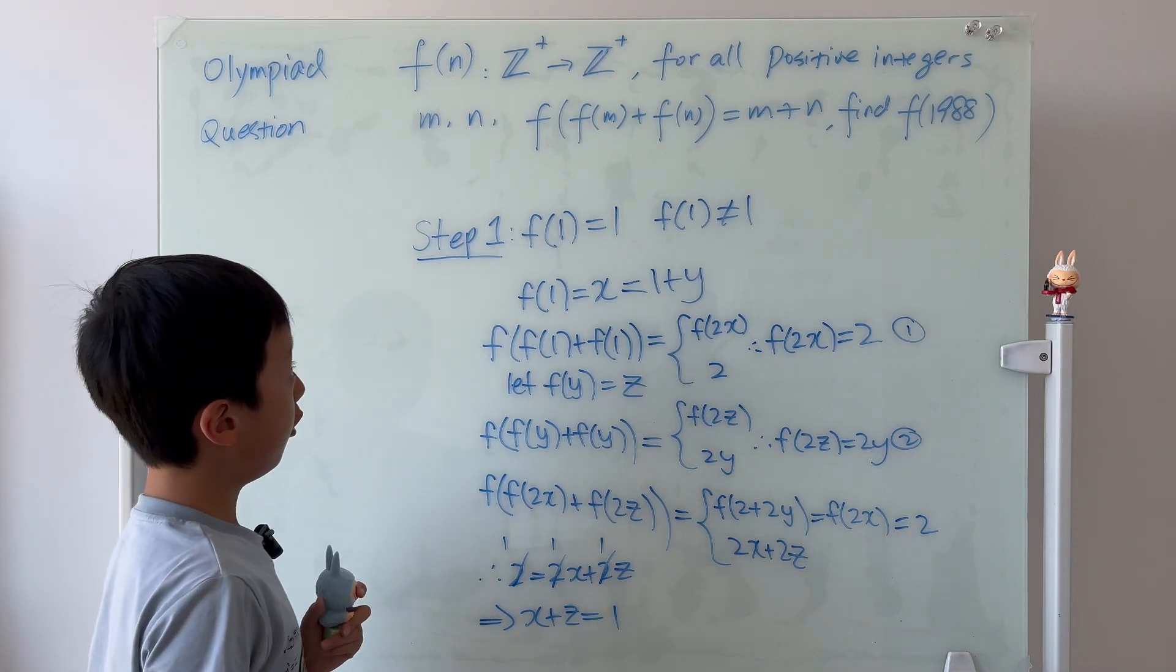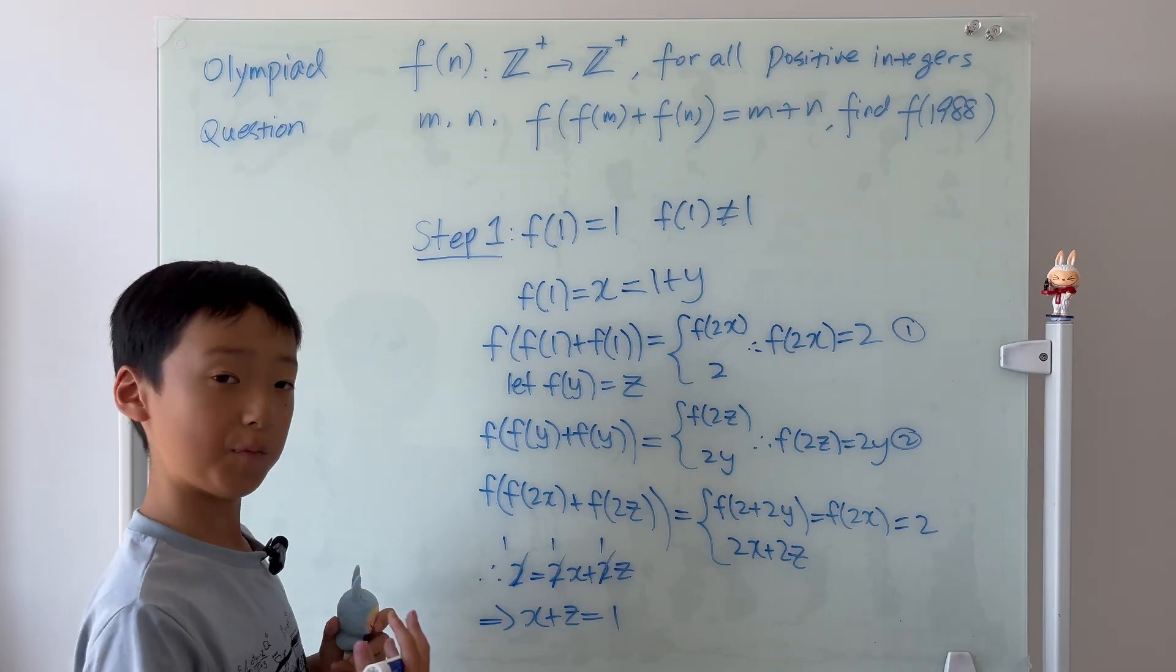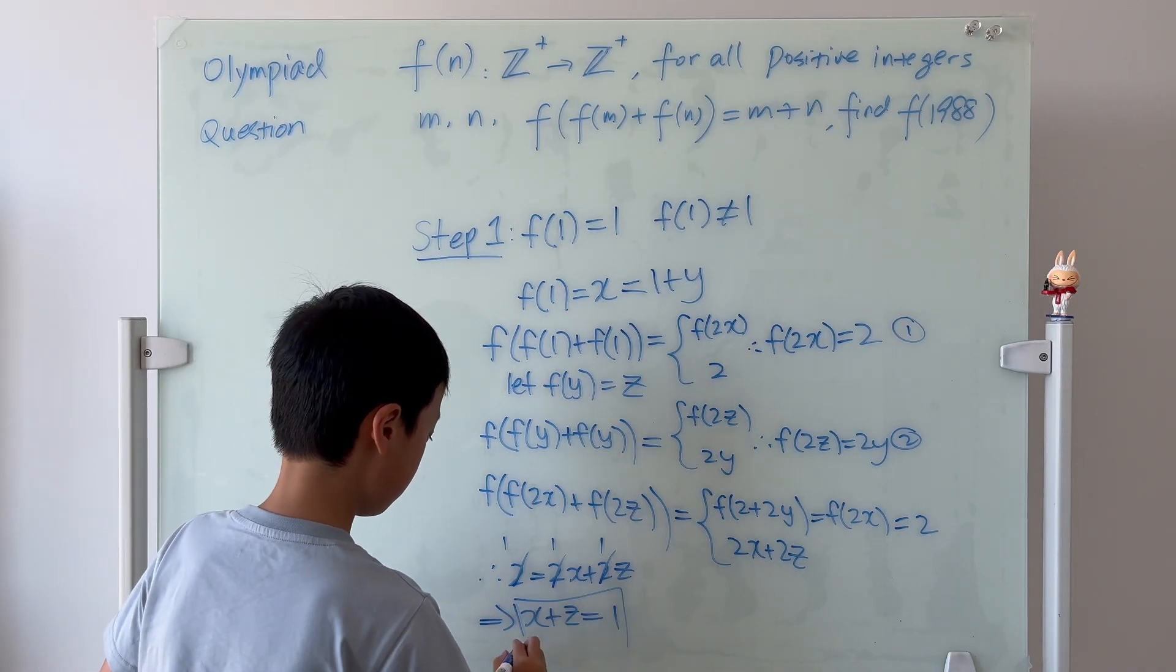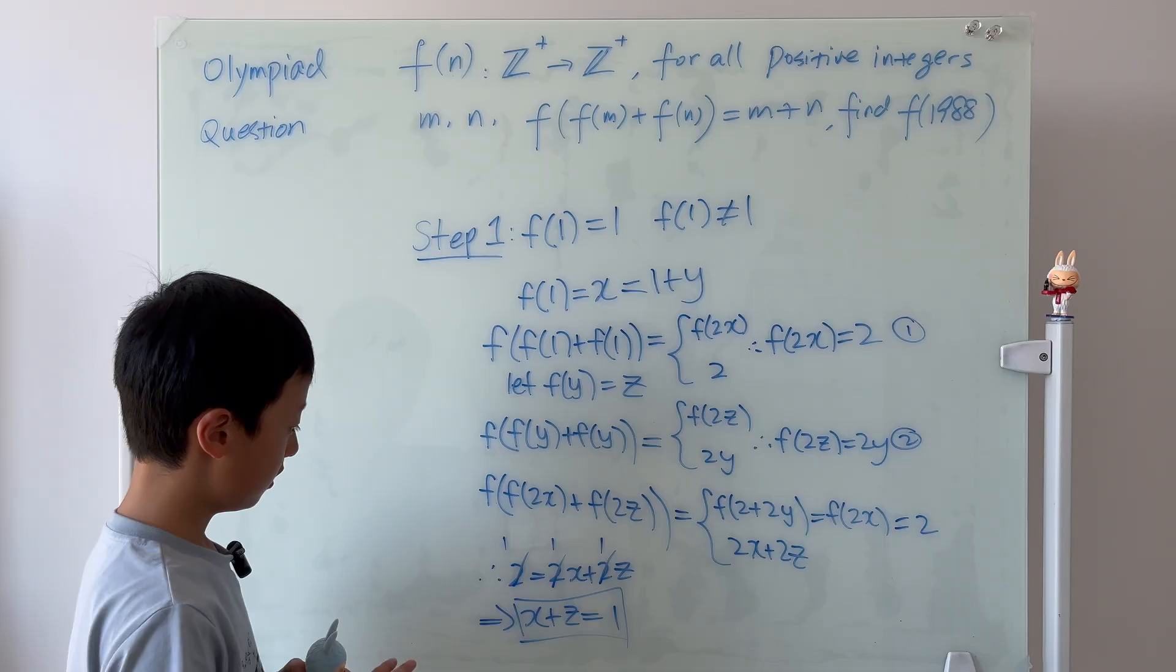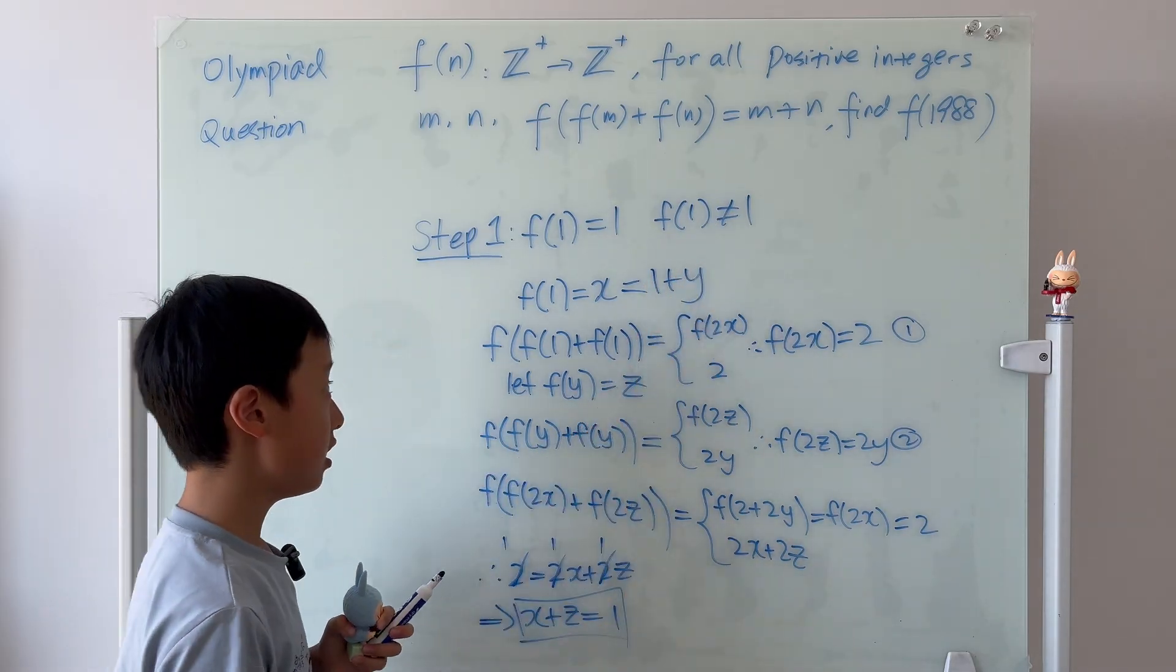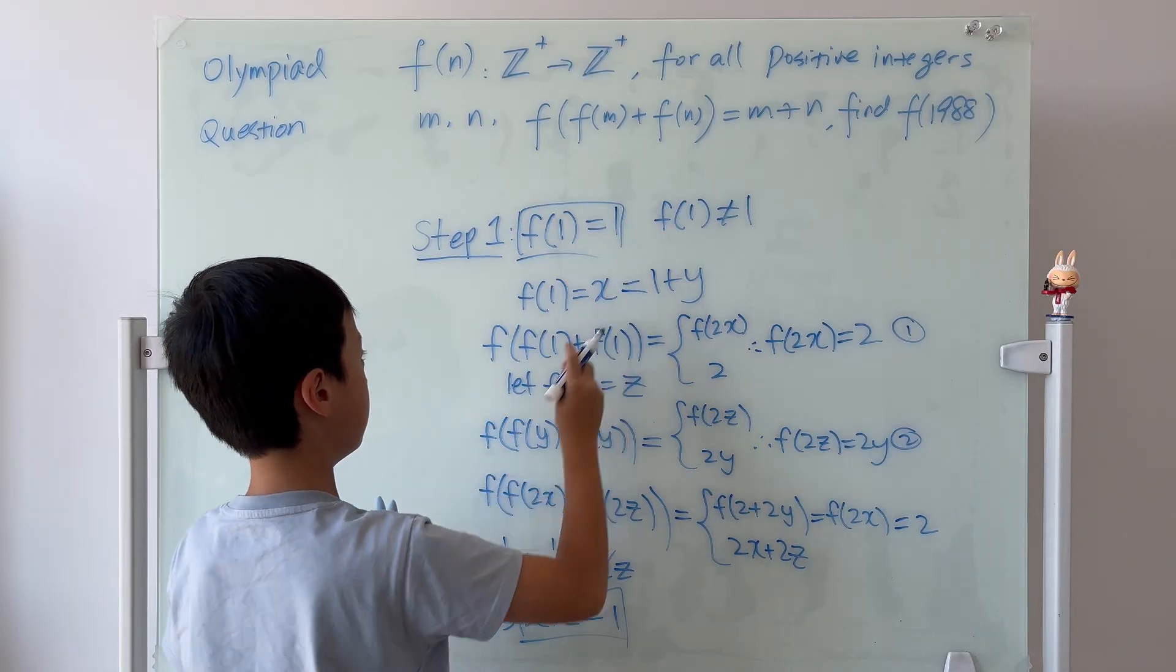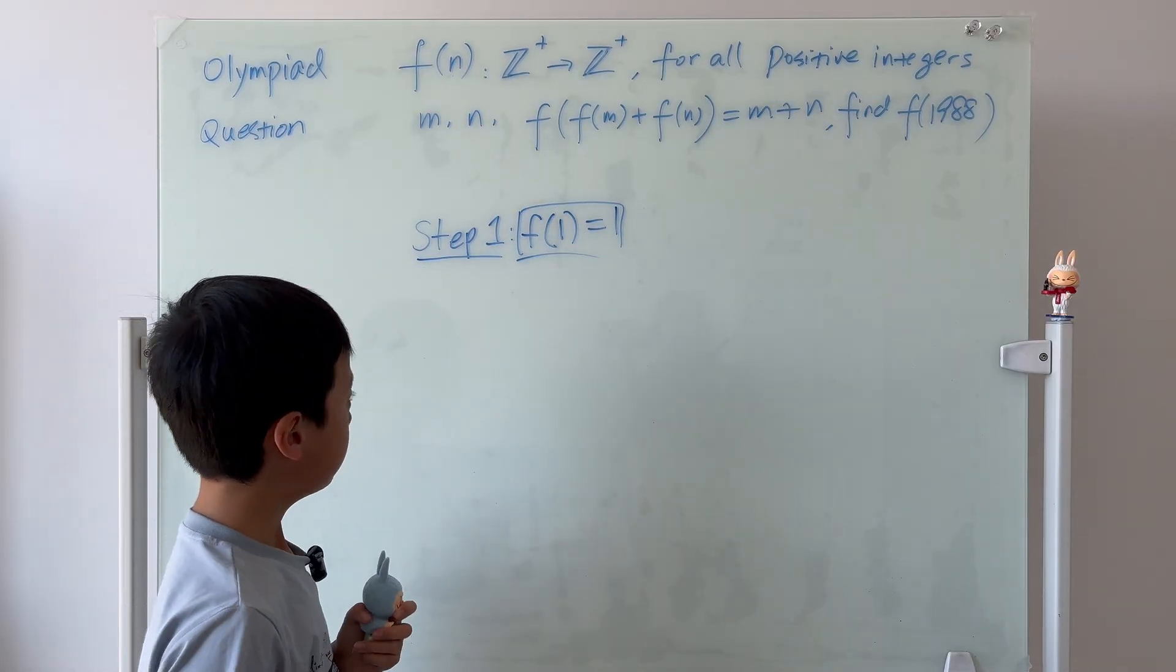And, we recall that x and z are all in the set of positive integers. So, then, this is impossible. So, this is a step that contradicts with this assumption. So, we know that this has to be true. Okay. Step 1 done.